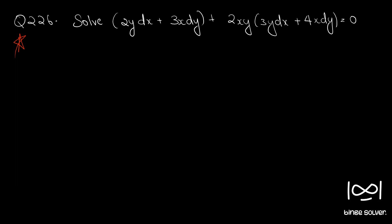Question number 226. Solve 2y dx plus 3x dy plus 2xy into 3y dx plus 4x dy equal to 0.